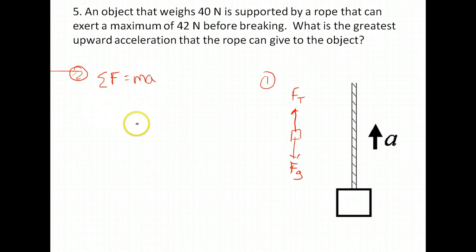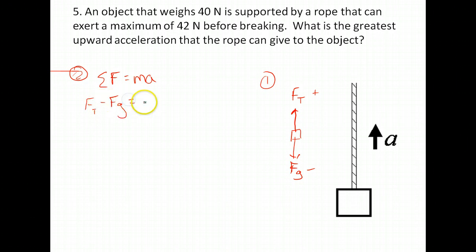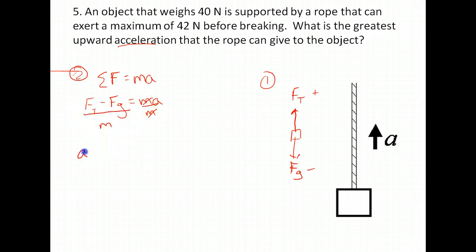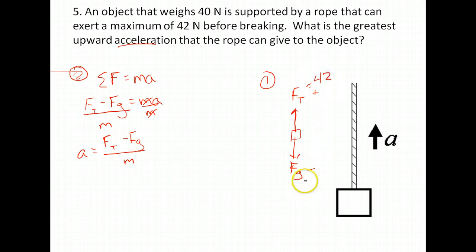The forces acting are tension and gravity. Let's make tension positive and gravity negative, so: tension minus gravity equals mass times acceleration. Solving for acceleration: acceleration equals tension minus gravity divided by mass. The maximum tension in that rope is 42 newtons — when tension reaches 42 the rope breaks. The weight of the object is 40 newtons. We plug in tension equals 42 and weight equals 40, then divide by mass.